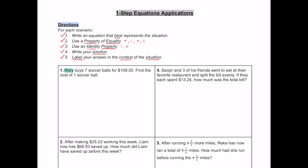For number one, Rory is going to buy seven soccer balls for $109.55. Our goal is to find the cost of one soccer ball. I'm going to use the variable s for one soccer ball. So if we buy seven soccer balls, that's going to be seven times s, and the cost is going to be $109.55. That would be the equation that we write here.